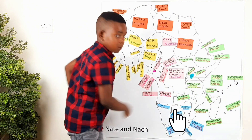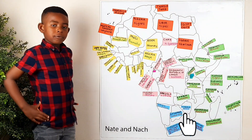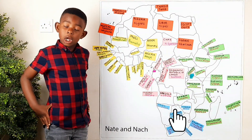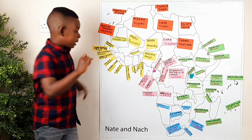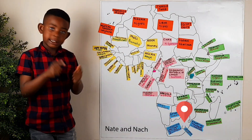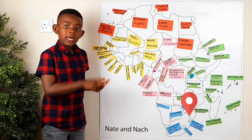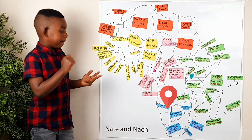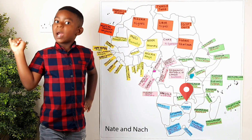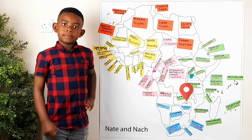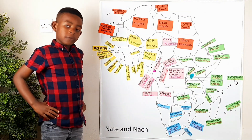So let's go on to our last region: South Africa. South Africa has six countries and I'm going to name them: South Africa, Lesotho, Eswatini, Namibia, Botswana, and Zimbabwe.